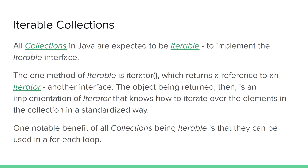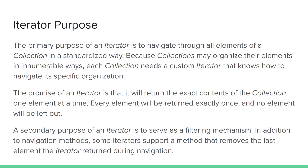The iterator object being returned is an implementation of iterator that knows how to iterate over the specific elements in a collection in a standardized way. One of the main benefits of this is that all collections are able to be used in a for-each loop. The primary purpose of any iterator is to navigate through all of the elements of a collection in a standardized way, and we need this because collections could organize their elements in innumerable ways with multiple different implementations. So every collection needs to supply a custom iterator that knows how to navigate that specific organization.